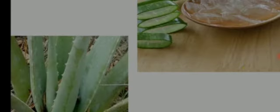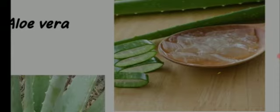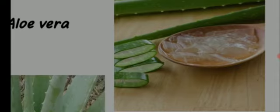Aloe gel is typically used to make topical medications for skin conditions such as burns, wounds, frostbite (caused by exposure to extreme cold), rashes, psoriasis (a skin disease), cold sores (sores at the corner of the mouth due to extreme cold weather), and dry skin.